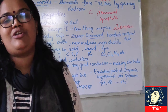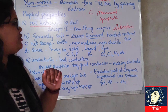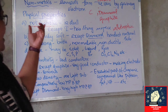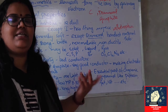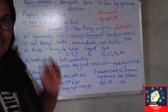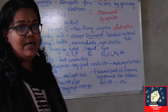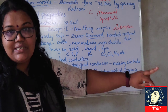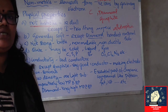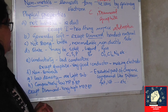We will discuss allotropic forms in detail in the carbon chapter. Coming back to the general properties of nonmetals — we said they are generally soft. Nonmetals are generally soft, except diamond, which is an allotropic form of carbon and is the hardest natural substance. There are even harder artificial substances, but among natural ones, diamond is the hardest.